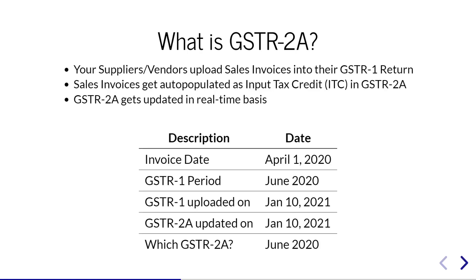Here is an example. An invoice dated April 1st 2020 — the supplier uploads it in the June 2020 GSTR1. Let's say they are a quarterly GSTR1 filer. The GSTR1 was actually uploaded very late, only on 10th January 2021. The moment the GSTR1 gets updated, the invoice will reflect in the GSTR2A in real-time on the same date, 10th January 2021.